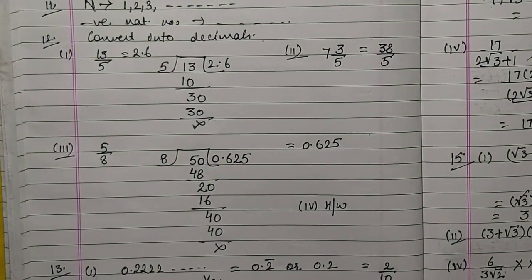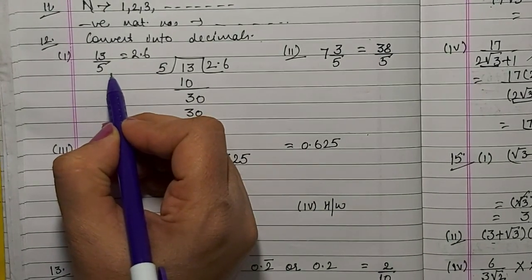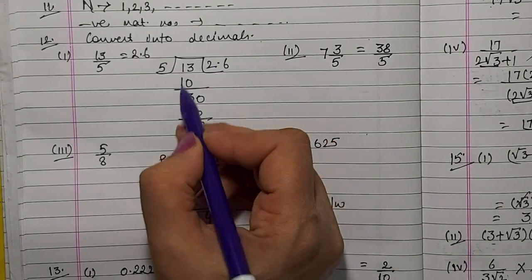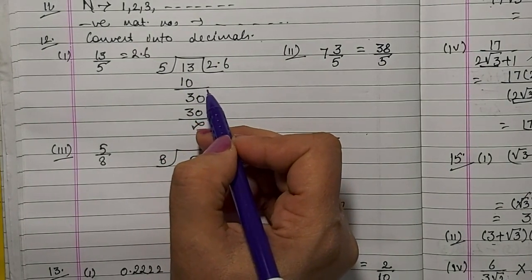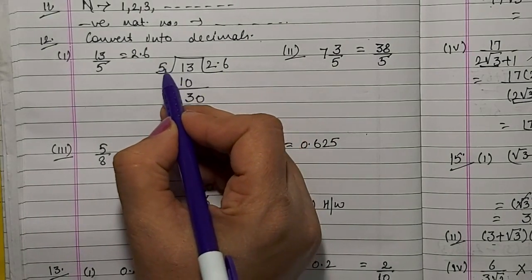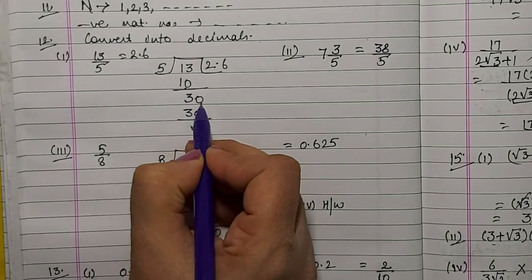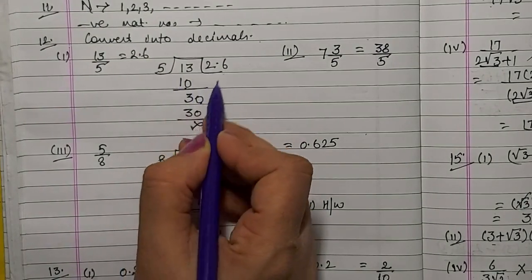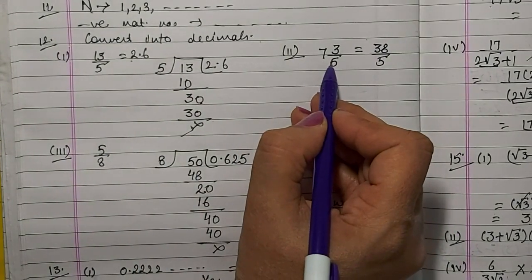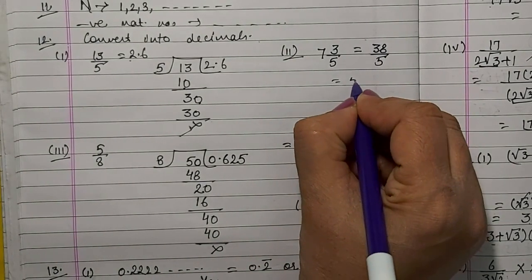12th question: convert into decimals. We are having a fraction 13 by 5. You know how to divide — show the division in your fair notebooks, this work is not to be done in rough. Divide: 13 by 5. 5 goes into 10, 3 left; 35, then 30. Decimal comes here: 5 sixes are 30. Hence the answer is 2.6. Second part is a mixed fraction — convert it into an improper fraction, then divide.